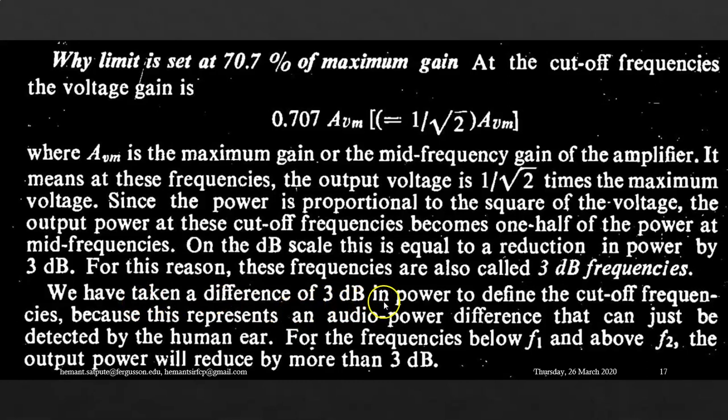We have taken a difference of 3 dB in power to define the cutoff frequencies because this represents an audio power difference that can just be detected by the human ear. For the frequencies below F1 and above F2, the output power will reduce by more than 3 dB.